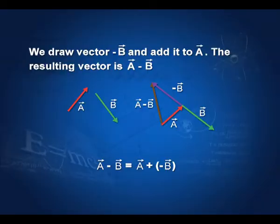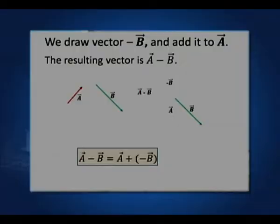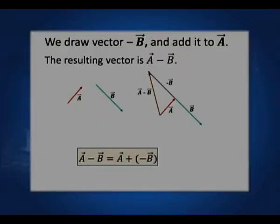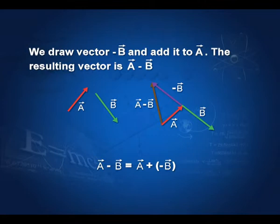Let me repeat: we have two vectors A and B. I want to subtract B from A, meaning I add minus B to A. I draw A, I draw minus B, then add A and minus B. So A minus B is actually equal to A plus (minus B). Note that A minus B is not equal to B minus A. In addition we had A plus B equal to B plus A, but in subtraction A minus B does not equal B minus A.